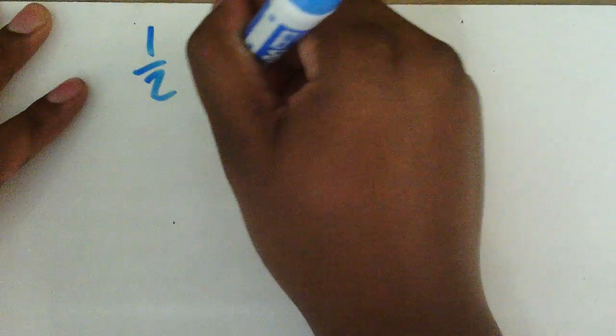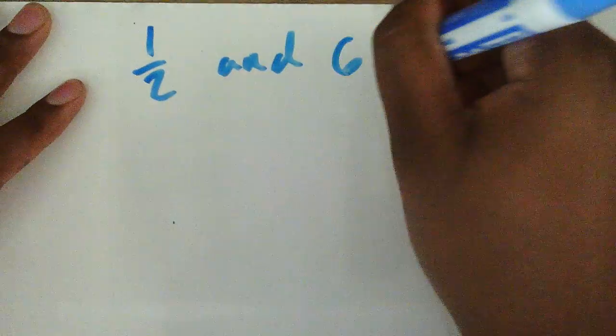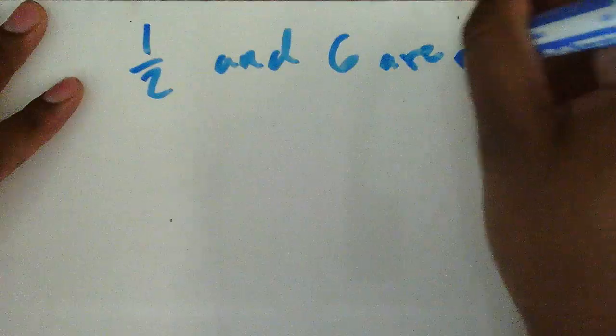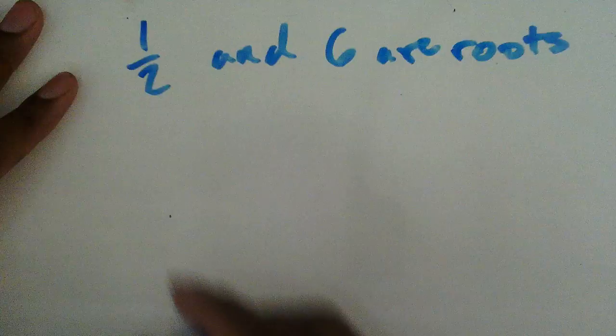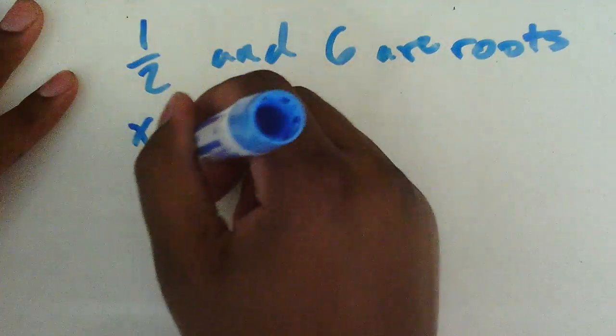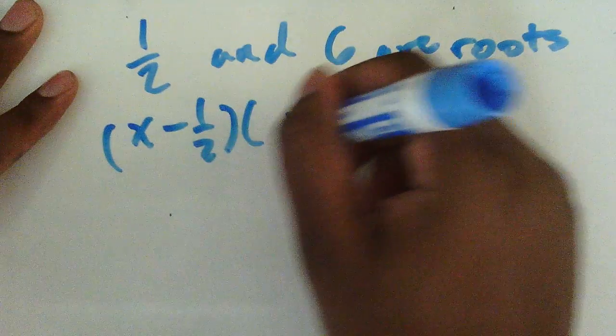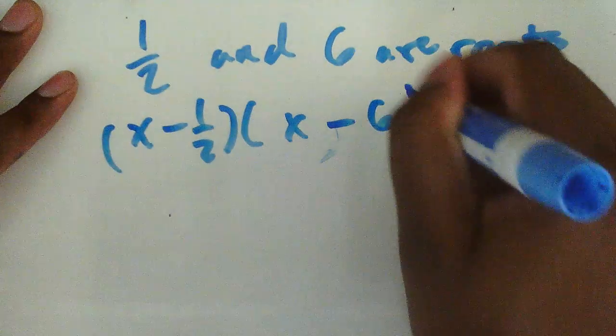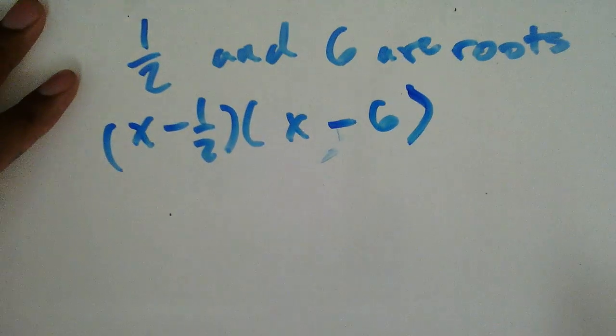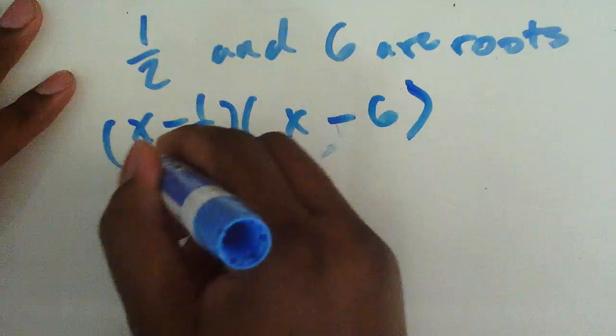So let's suppose that I say that one half and six are roots. Well, what that means is you'll have x minus one half and x minus six. Once again, the signs are opposite. If I multiply this out,